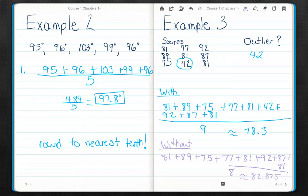I come up with an average of 82.875. It's a much different score than with that outlier. Alright, I would like you to complete all three quick checks and the check your understanding. We will go over them the next time I see you.